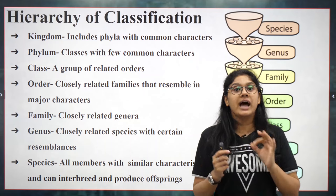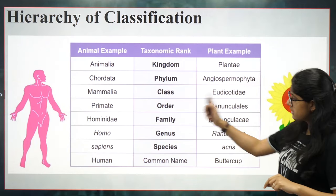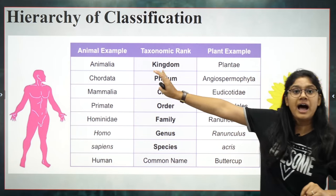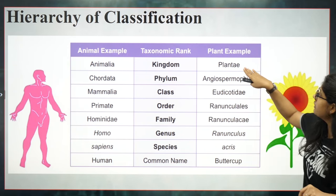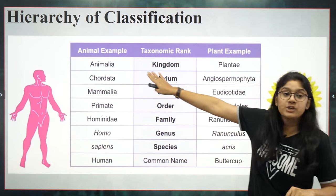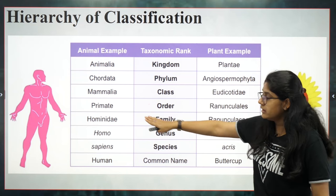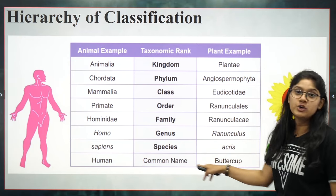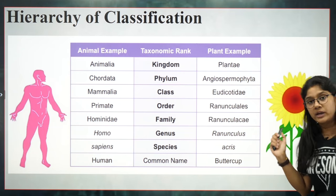This is an important topic in your ninth class and carries a lot of weightage, so please pay attention. Here is a small table — you can take a picture of it. For animals: Kingdom is Animalia, Phylum is Chordata, Class is Mammalia, Order is Primates, Family is Hominidae, Genus is Homo, Species is sapiens, and the common name is humans. They have also given the classification for the buttercup plant.